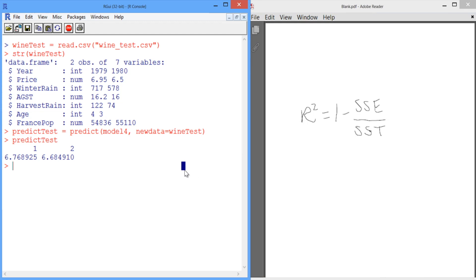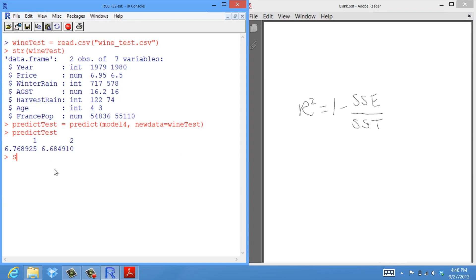So let's start by computing the sum of squared errors on our test set. The sum of squared errors equals the sum of the actual values, wineTest$Price, minus our predictions, predictTest, squared, and then summed.